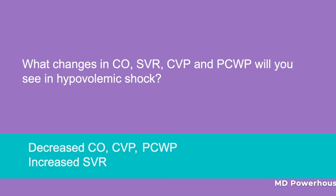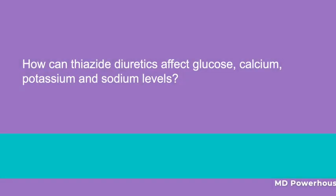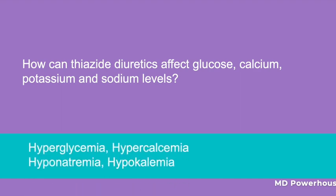How can thiazide diuretics affect glucose, calcium, potassium, and sodium levels? Thiazide diuretics can cause hyperglycemia, hypercalcemia, hyponatremia, and hypokalemia. Recall that they can also cause hyperuricemia. These are high-yield metabolic side effects of thiazide diuretics that you need to know.